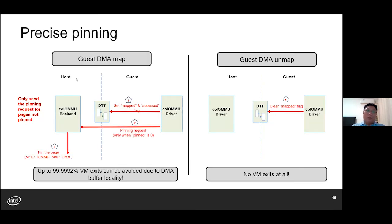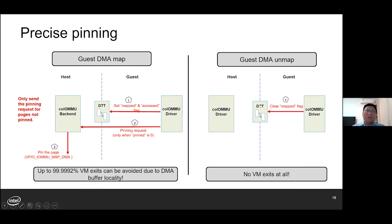Let's take a look at the process of guest DMA mapping operations. For DMA map, the guest Co-IOMMU driver will set the mapped and accessed flag in the DTT entry for each target GFN. Meanwhile, it will check the pin status of this DMA page, and the pinning request is necessary only when the pinned flag is zero. The good news is that we found more than 99% of pinning requests can be avoided thanks to DMA buffer locality — a recently used DMA buffer is very likely to be reused in following DMA operations. When the guest unmaps the DMA page, the Co-IOMMU driver just clears the mapped flag in the DTT entry for the target GFN, so there is no VM exit at all.